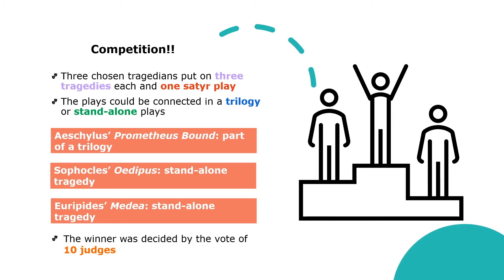The three tragedies could be connected in a trilogy or stand-alone plays. For example, Aeschylus' Prometheus Bound was part of a trilogy, while Sophocles' Oedipus and Euripides' Medea were stand-alone tragedies. Each tragedian had one day of the competition to stage their plays, and the winner was decided by a vote of 10 judges — generally one from each of the 10 tribes of Athens and Attica. Sophocles came second with Oedipus; Euripides came third with Medea.